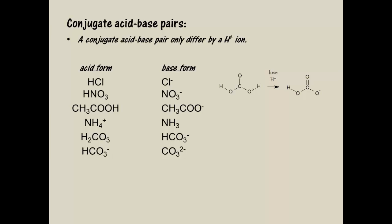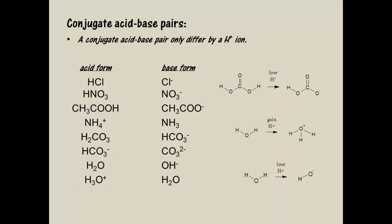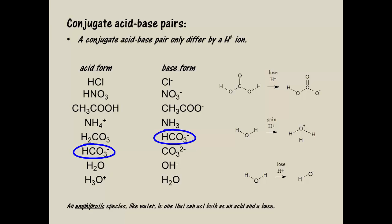Water is a really important substance, especially in acid-base chemistry. It can act as an acid, losing a proton to form the conjugate base of the hydroxide ion. And also, just as importantly, it can act as a base, gaining a proton to form the conjugate acid of H3O+, which is called the hydronium ion — and this is a more accurate way of representing acids in solution. A species like water that can act as both an acid and a base is called amphiprotic. The bicarbonate ion is also an amphiprotic species, so it can both gain and lose a proton, but when you dissolve bicarbonate ions in water, it only acts as a base.